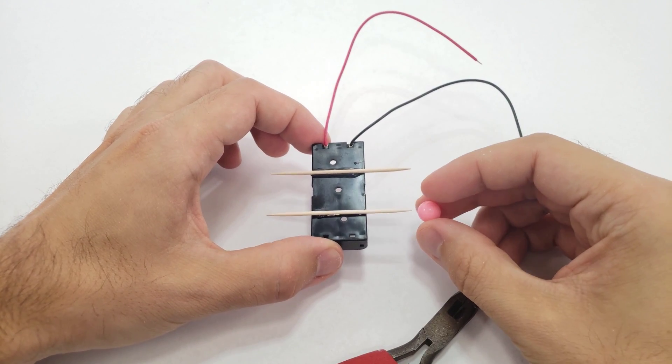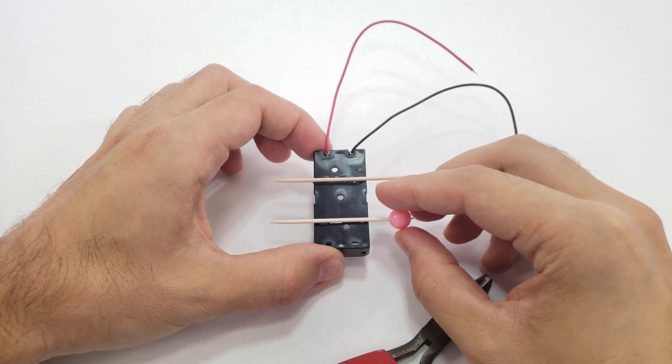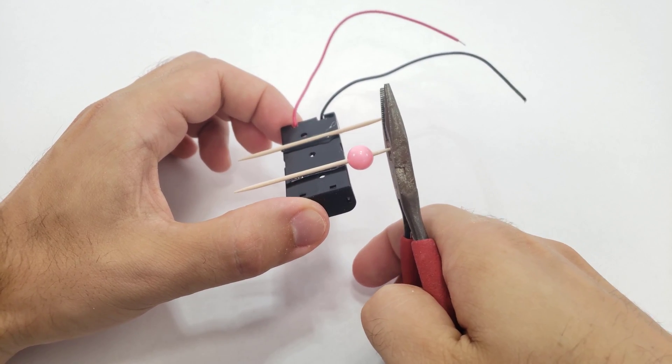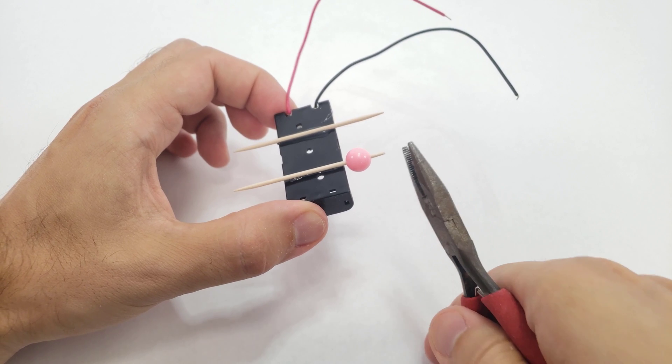To attach the wheels, slide a bead onto one of the toothpicks. Then use the cutting edge of needle-nose pliers to cut off the pointy end of the toothpick.